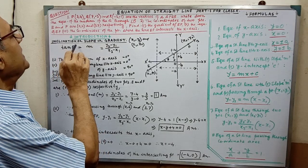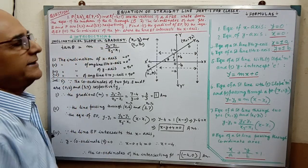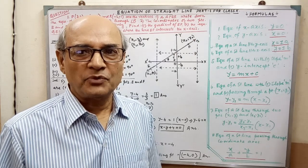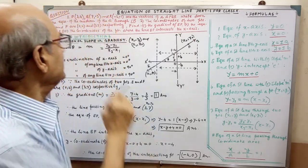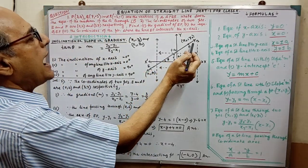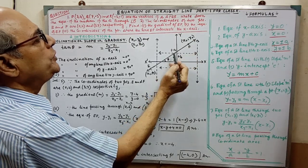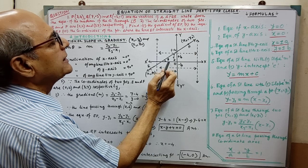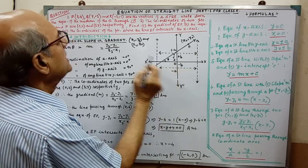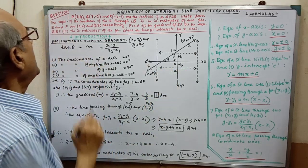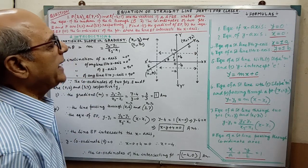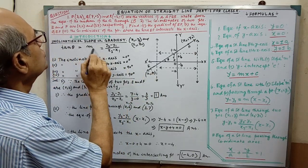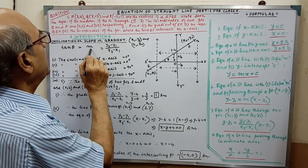Inclination, slope, and gradient — these terms are inevitable for this chapter. Inclination is the angle at which a straight line is inclined with the x-axis, denoted by tan theta. Slope is also the inclination, denoted by M, and is given in the form of an equation.